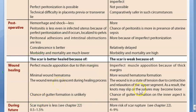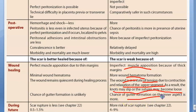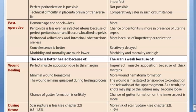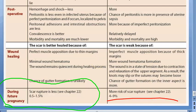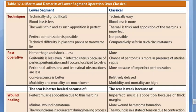Because the lower segment is quiescent, it heals better — you get perfect muscle opposition, minimal wound hematoma, and the wound remains quiescent during the healing process. Gutter formation is unlikely. In the classical operation, there is imperfect muscle opposition, thick margins, wound hematoma, and the wound is in a state of tension due to contraction and relaxation of the upper segment.